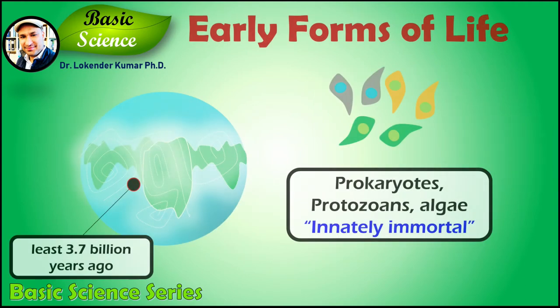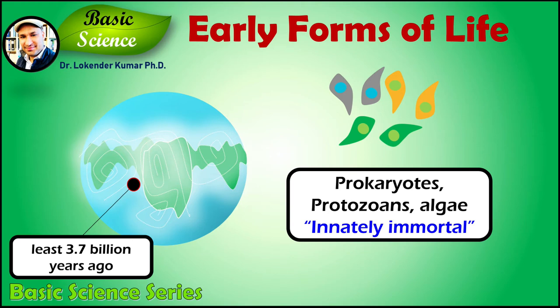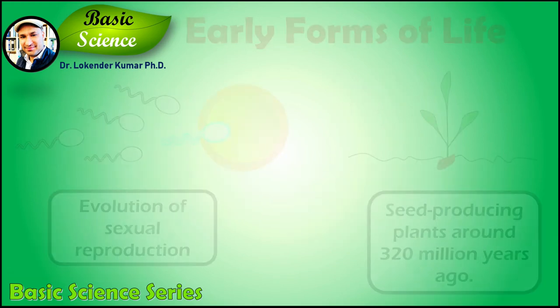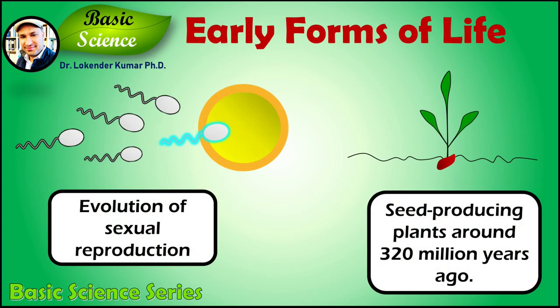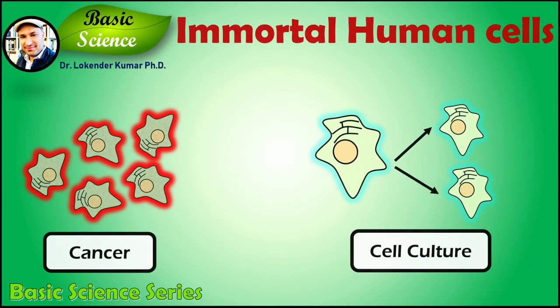Early life forms on Earth, starting at least 3.7 billion years ago with single-celled organisms such as prokaryotes, protozoans, and algae, multiply by fission into daughter cells — thus do not age and are innately immortal. Aging and mortality of the individual organism became possible with the evolution of sexual reproduction, which occurred with the emergence of the fungal and animal kingdoms approximately a billion years ago, and the evolution of seed-producing plants over 320 million years ago.